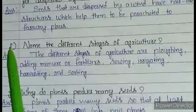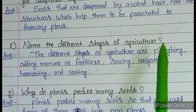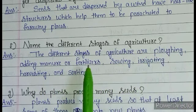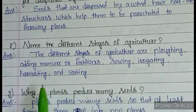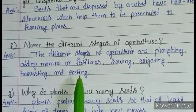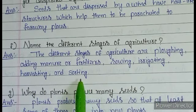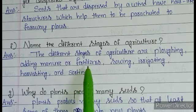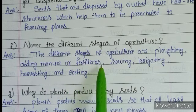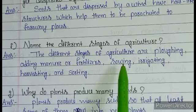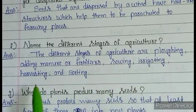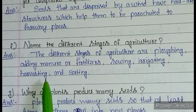Question F: name the different stages of agriculture. Answer: the different stages of agriculture are ploughing, adding manure or fertilizers, sowing, irrigating, harvesting, and sorting. First we do ploughing the soil, then we add manure or fertilizers, then we sow seeds, then we irrigate the land, then harvesting, and after harvesting we do sorting.